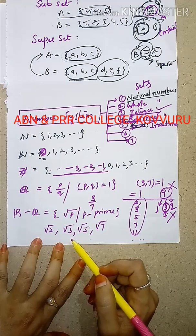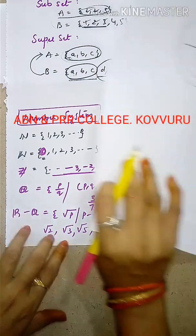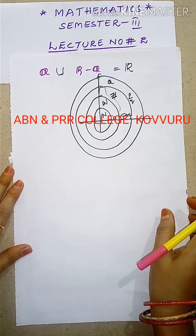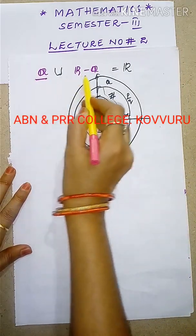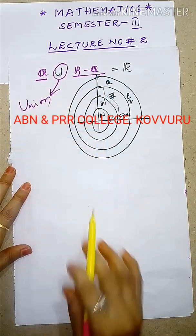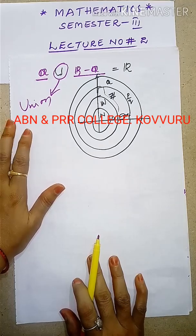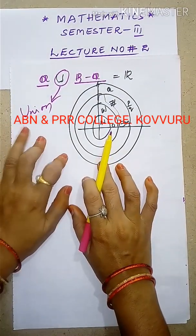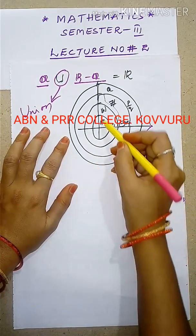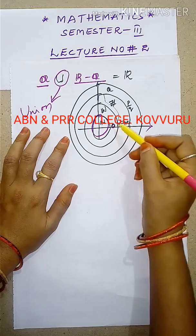Numbers that cannot be expressed in rational form — such as square roots of non-perfect numbers — form the set of irrationals. The set of reals is the union of rationals and irrationals. Real numbers are formed by taking the union of rational and irrational numbers.